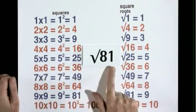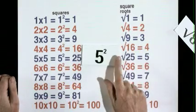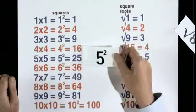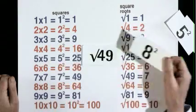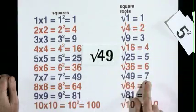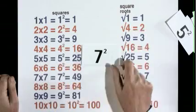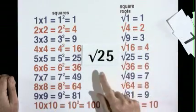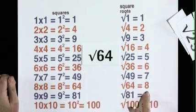Route 81 is 9. 5 squared is 25. 8 squared is 64. Route 49 is 7. 7 squared is 49. Route 25 is 5. Route 64 is 8.